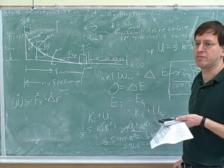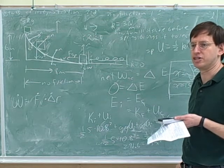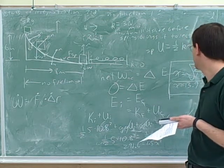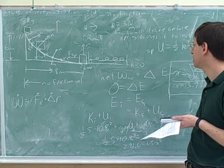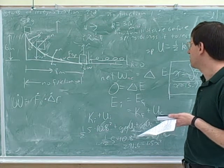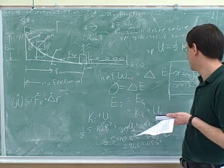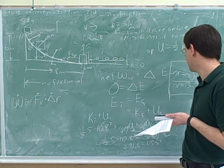And those are the only potential energies you'll see this semester: spring potential energy and gravitational potential energy. Next term, you'll learn about electric potential energy. We saw that lots of things tend to end up being zero, so you've got to watch out for that, and you've got to be careful with the signs.